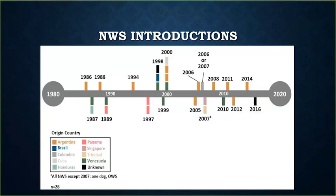It brings to mind that the probability of a New World Screwworm introduction occurring again in the future is somewhat high. Looking at the last 40 years or so, we have had 29 introductions of New World Screwworm in the United States — on average every two to three years. The 2018 confirmation in Florida on the Venezuelan dog is not reflected on that slide, but it brings to mind that we need to be prepared and keep the knowledge gained through the eradication effort in Florida fresh in our minds.